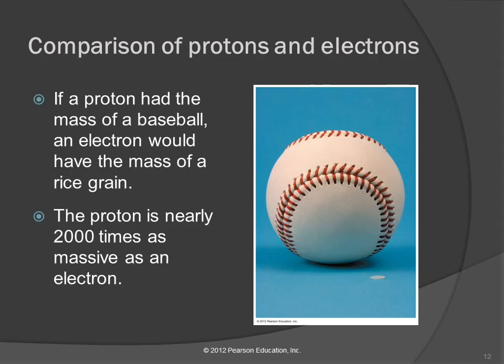But this is interesting. If a proton had the mass of a baseball, an electron would have the mass of a rice grain. So that kind of gives you a baseball versus one grain of rice. Really tiny.